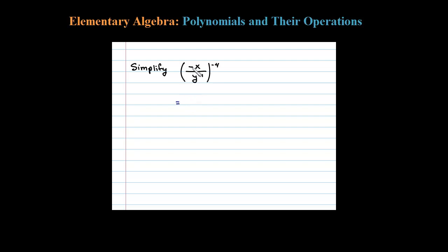So I'm going to write this as negative 1 to the negative 4th power, distributing the exponent, x to the negative 4th power, all over y to the fourth power. Now when you take power to power like that, remember you multiply exponents.